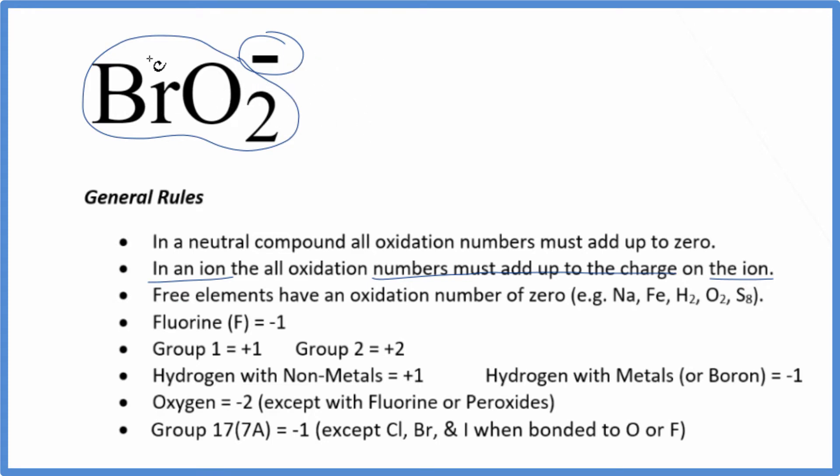We can just set an equation up. We don't know what the bromine is. We do know that oxygen is almost always minus two, with a few exceptions. So let's set an equation up.